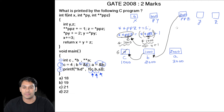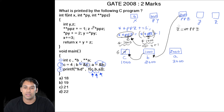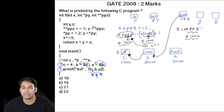The next statement is z = **ppz. So from the first star, we go to location 2000 and get *(1000). From the second star, we go to location 1000 and take the value stored there, which is now 5. Therefore, the variable z is going to store 5.